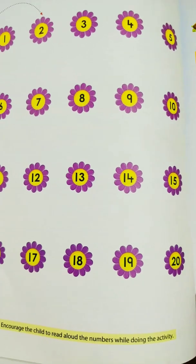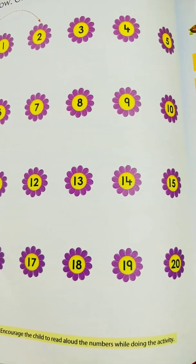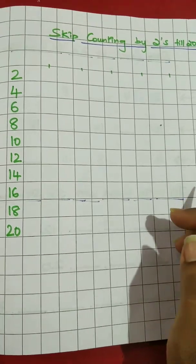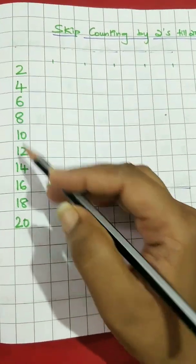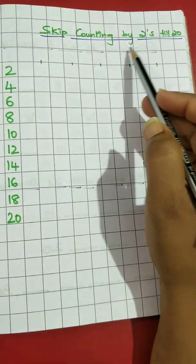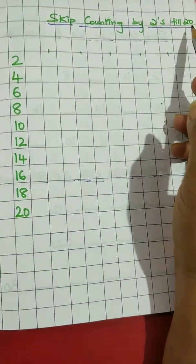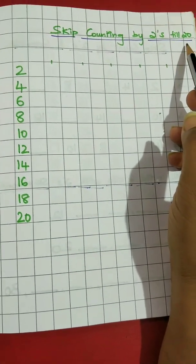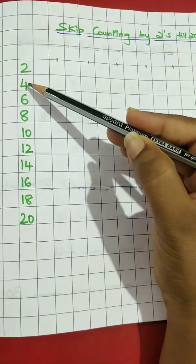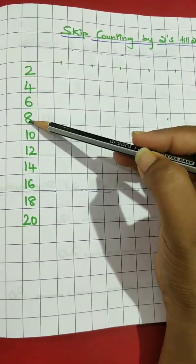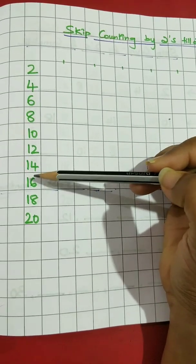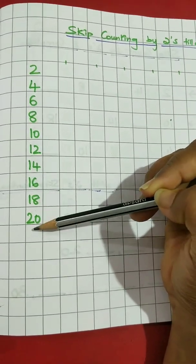Well done children. Now let's do small activities in the notebook also. Ask mama to write it in this way so that you can practice. Skip counting by twos till twenty — we already did it in your textbook, same way let's practice in the notebook also. Two, four, six, eight, ten, twelve, fourteen, sixteen, eighteen and twenty.